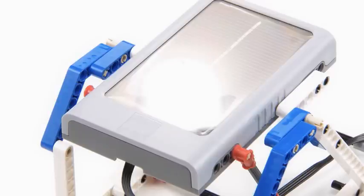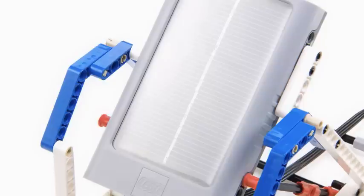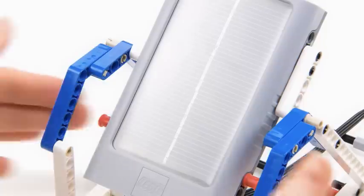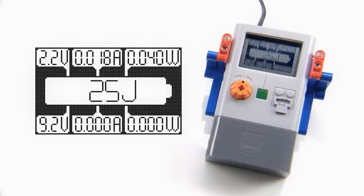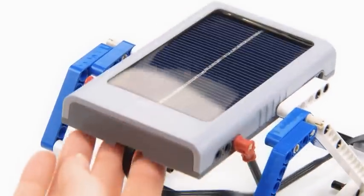Change the position of the solar station to a diagonal position, and then to a vertical position. Watching the input readings on the meter, you can clearly see the change in the solar station's performance.